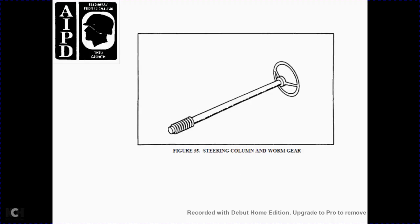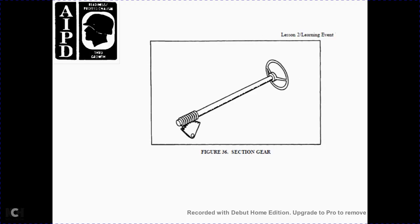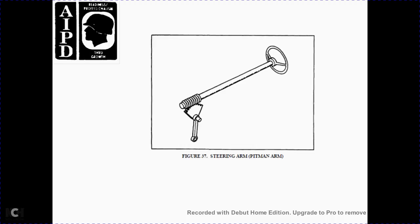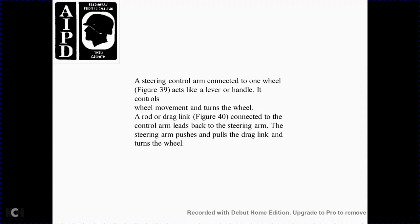Figure 35 shows the steering column and the worm gear. Figure 36 shows the section gear. Figure 37 shows the steering arm and the pitman arm. Figure 38 shows the pivot pin and the steering control arm connected to one wheel.